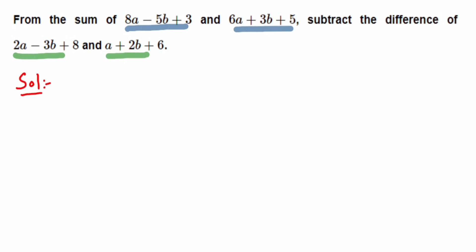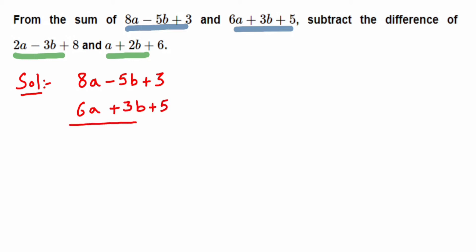First, I'm going to add the first two expressions using the column method: 8a minus 5b plus 3, and 6a plus 3b plus 5. Adding: 8a plus 6a gives 14a; minus 5b plus 3b gives minus 2b; and 3 plus 5 gives 8. So the sum is 14a minus 2b plus 8.